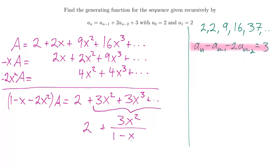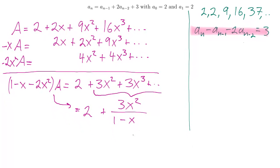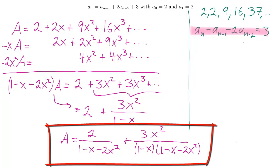Alright, so now it's time to go ahead and write down the final generating function for A. Okay, this is, this whole thing there, that's what that's equal to. I get A is equal to 2 divided by 1 minus x minus 2x squared plus 3x squared divided by, well, I had 1 minus x before, but then I also have my 1 minus x minus 2x squared. So, that monstrosity of a generating function is my final answer, and there I have it.